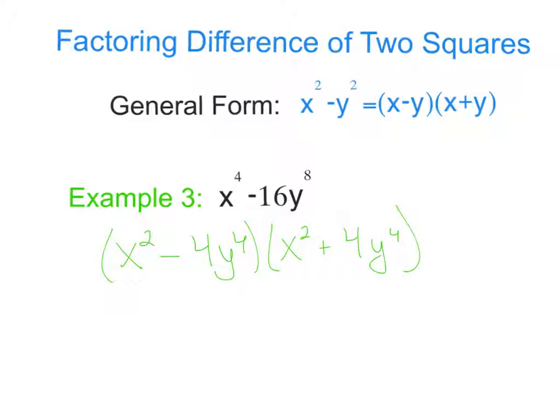Oh, that wasn't so bad. But what we have to be careful here is that this first binomial product can be factored again using difference of 2 squares, because we can factor that into x minus 2y squared and x plus 2y squared.